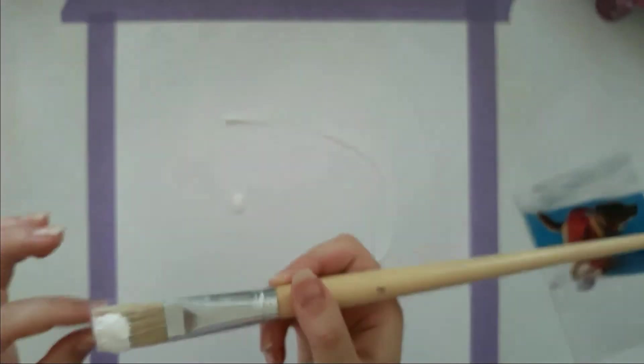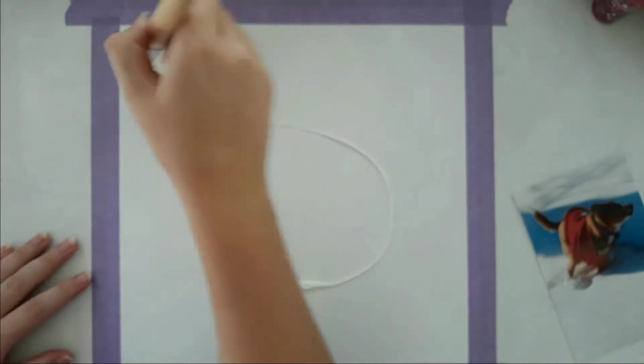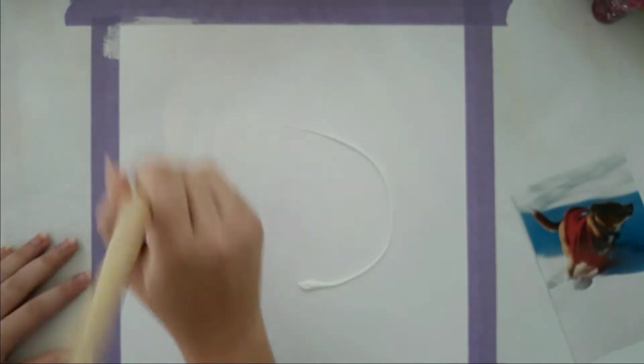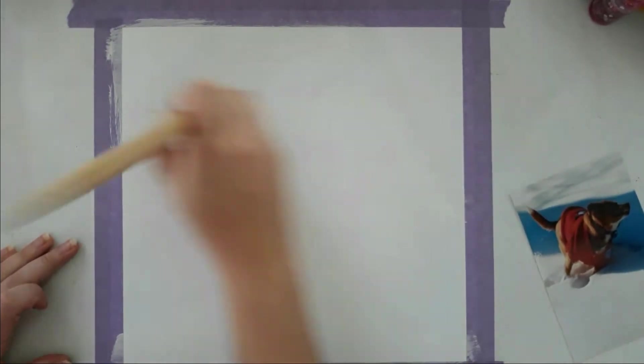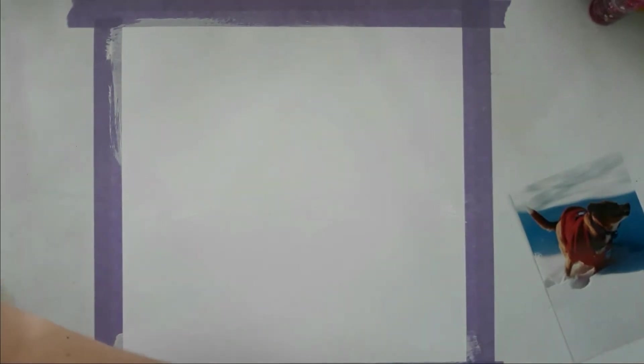Today I'm showing you how to use food wrap to create awesome backgrounds. So I taped down a piece of heavyweight white cardstock and I'm just showing the page and showing you a picture of my dog that I actually wanted to scrap.